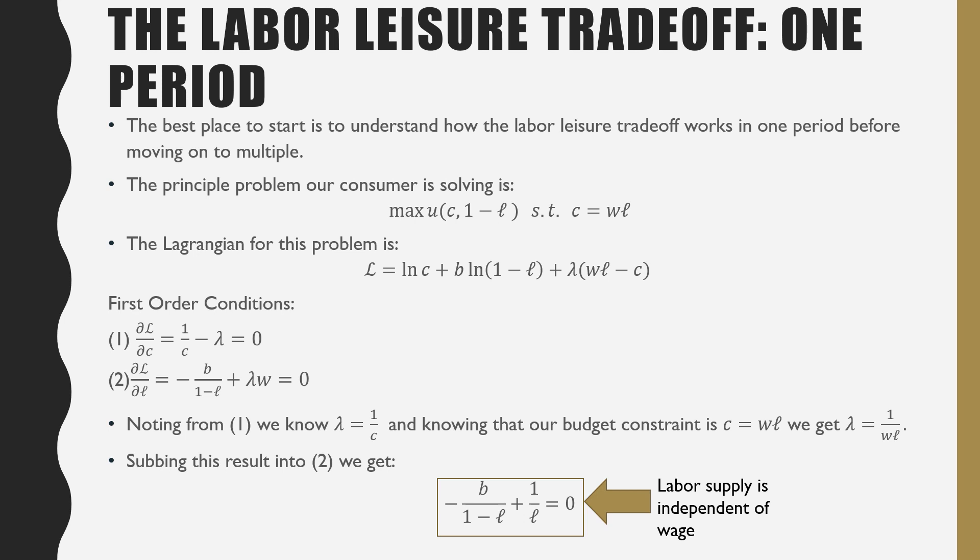Noting that in 1, we have lambda is equal to 1 over C. And knowing that our budget constraint is equal to WL, which is the wage times labor supplied, we get lambda is equal to 1 over WL.